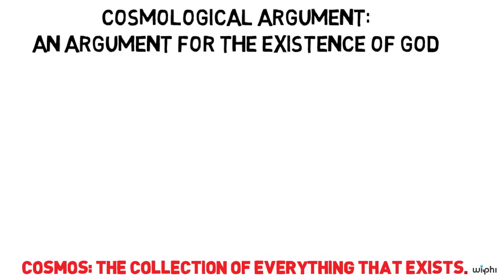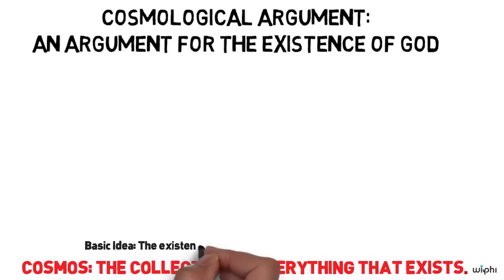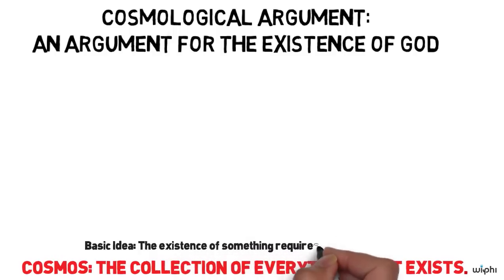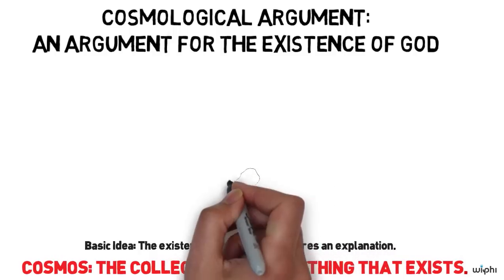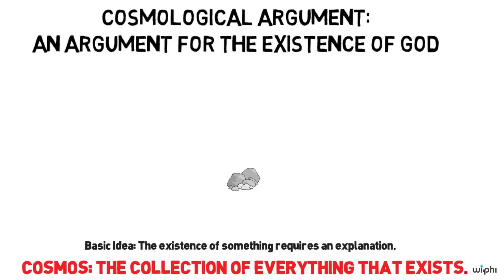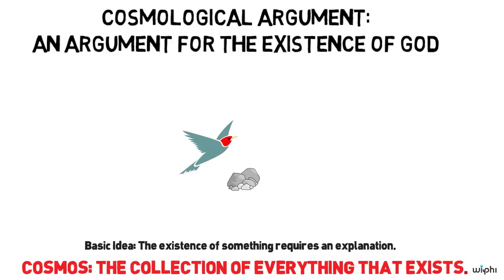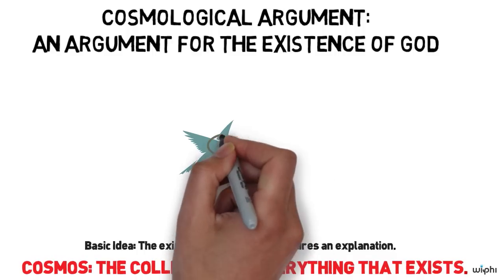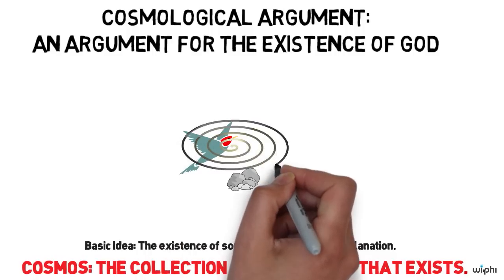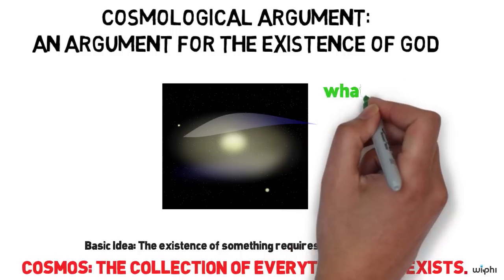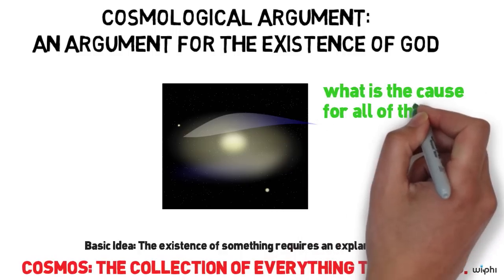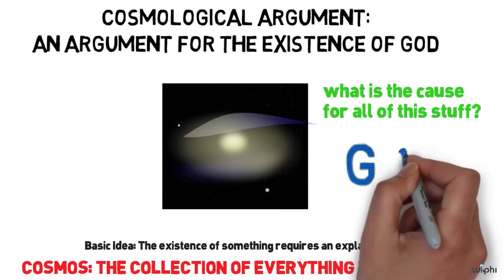The basic idea at the heart of the various versions of the cosmological argument is that the existence of something, this rock, that bird flying, this universe, requires an explanation. This is often phrased in the following way: the existence of this object or the whole universe demands that there be a cause, and this cause must be God.